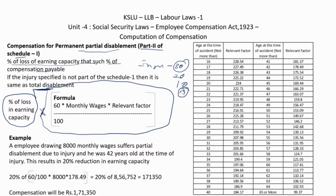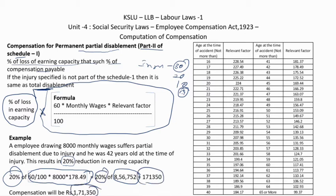Example of partial disablement: employee drawing ₹8,000 suffers partial disablement at age 42, resulting in 20% reduction in earning capacity. First calculate total disablement compensation: (60/100) × 8,000 × 178.49 = ₹8,56,752. Then take 20% of that: ₹1,71,350. So ₹1,71,350 is the compensation payable for permanent partial disablement.